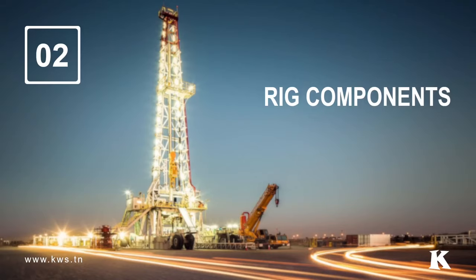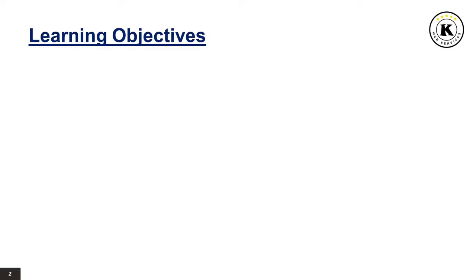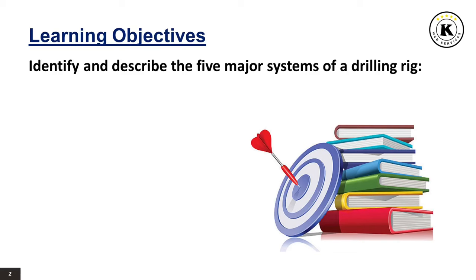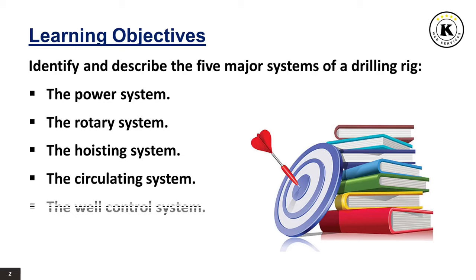Rig Components. By the end of this lesson, you should be able to identify and describe the five major systems of a drilling rig: the power system, the rotary system, the hoisting system, the circulating system, and the well control system or blowout prevention system.